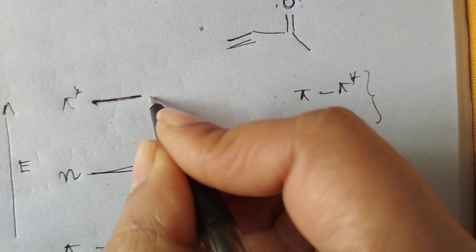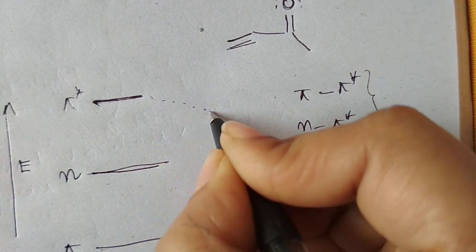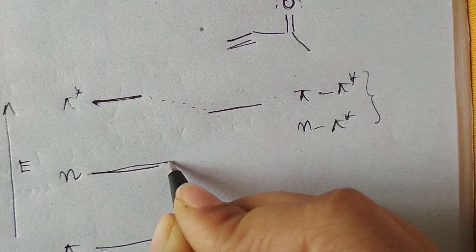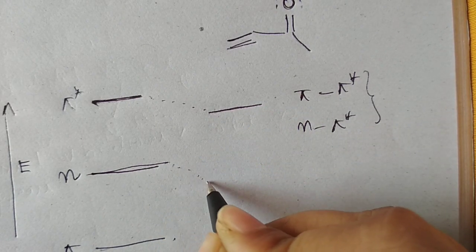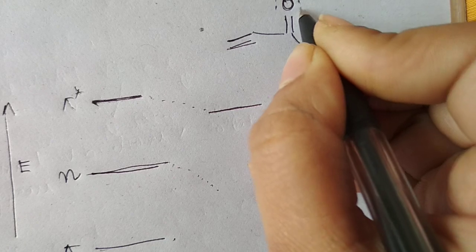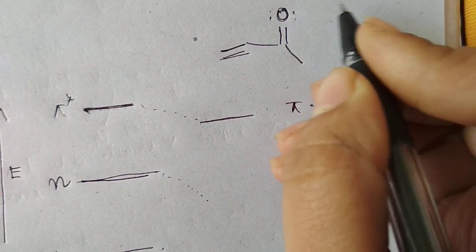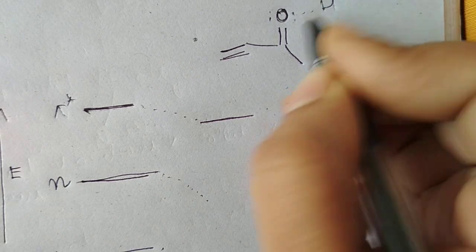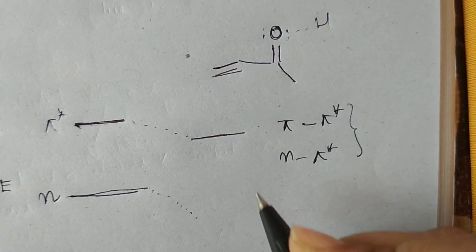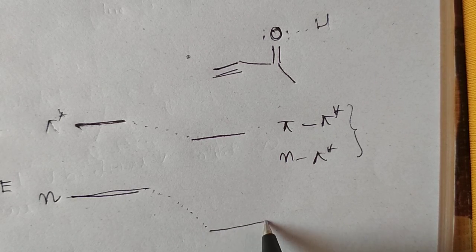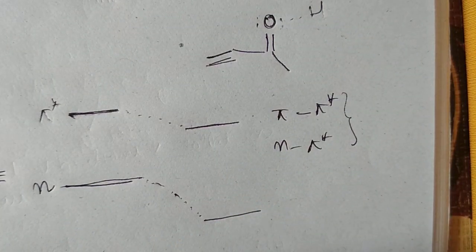As a result, their energy decreases. Since we have non-bonding electrons, and in polar solvent it can undergo hydrogen bonding, the n orbital is most stabilized. Pi is also stabilized, but not as much as pi star and n.